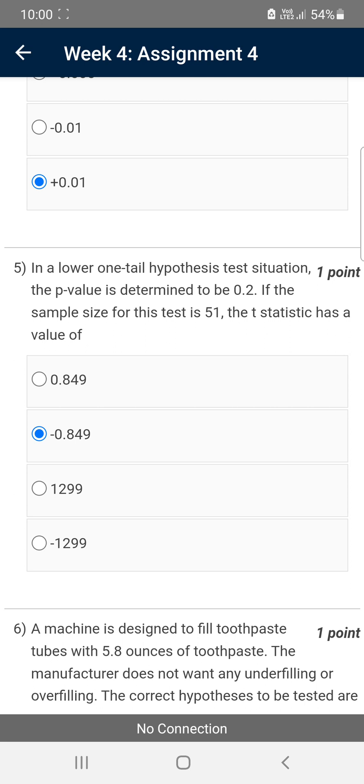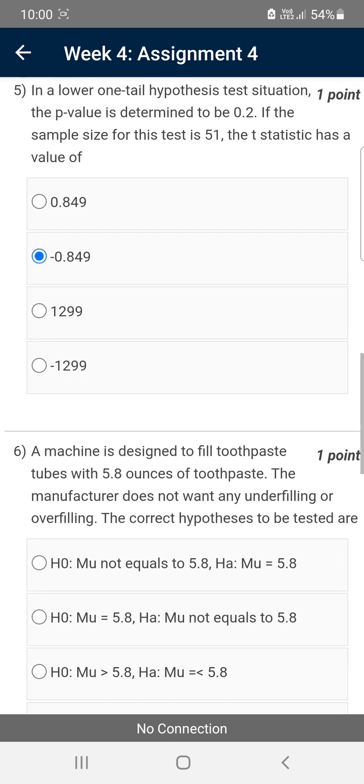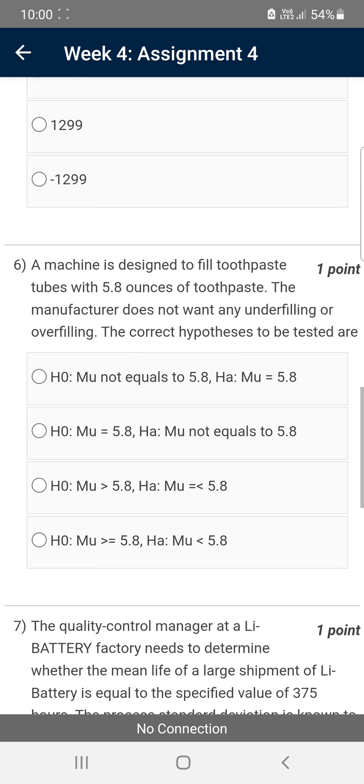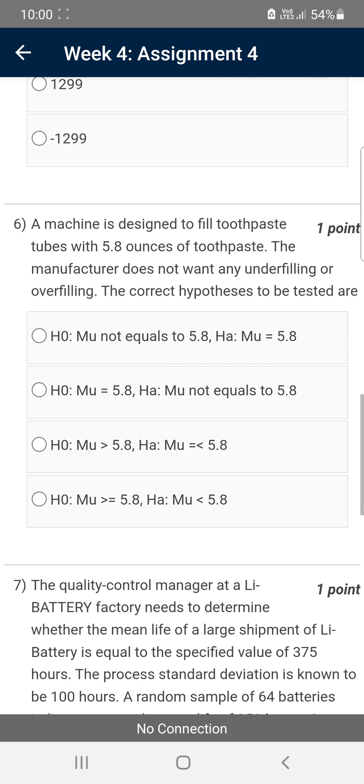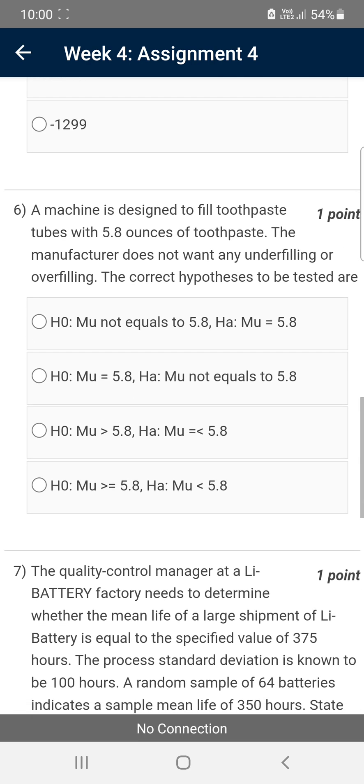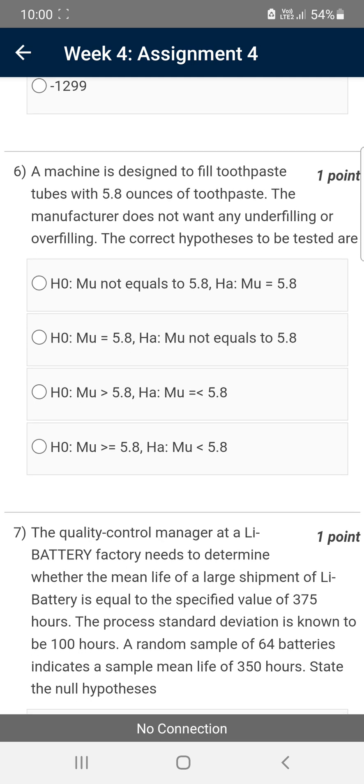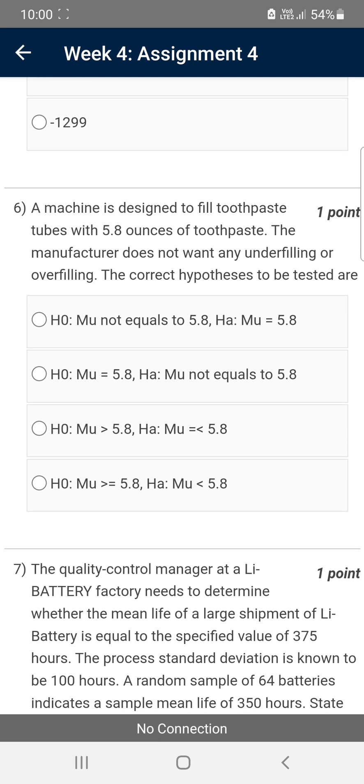Moving on to the sixth question. A machine is designed to fill toothpaste tubes with 5.8 ounces of toothpaste. The manufacturer does not want any underfilling or overfilling. The correct hypotheses to be tested are—for the sixth question, it is also the second option. For H0: mu equals 5.8, for HA: mu not equals 5.8.